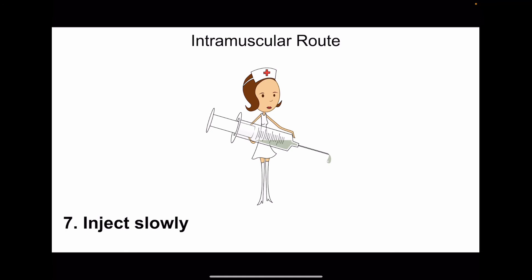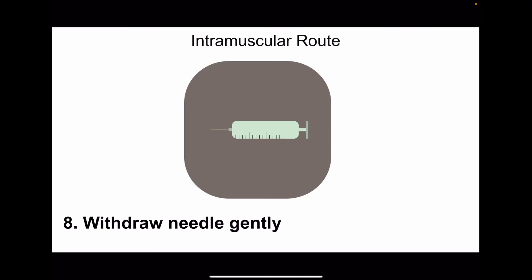The seventh step is that once you have confirmed the needle is in the muscle, you need to inject the drug slowly. The eighth step is to withdraw the needle gently after injecting the drug.